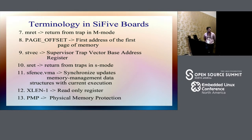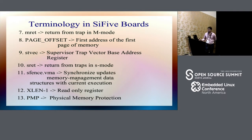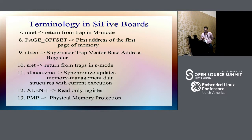S-return is return from traps in supervisor mode. S-fence.vma is the memory barrier instruction equivalent to DMB/DSB/ISB in ARM — memory barriers used for memory-supported operations. XLEN and PMP — physical memory protection — are terminology provided by RISC-V. RISC-V has four privilege modes: user mode, supervisor mode, hypervisor, and machine mode. The SBI, supervisory binary interface, acts as an interface between machine mode and supervisor mode.